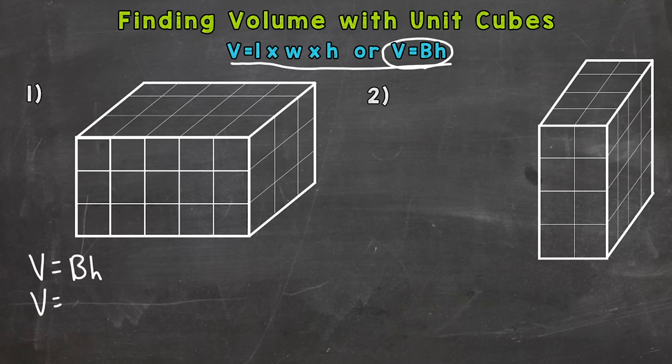So what this means, essentially, is find how many cubes make up one layer of that rectangular prism. It doesn't matter if it's the top or bottom, either will work. So let's do the top layer. Count how many cubes are on that top layer.